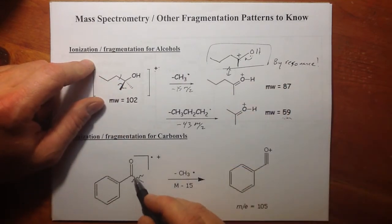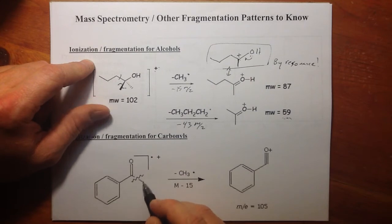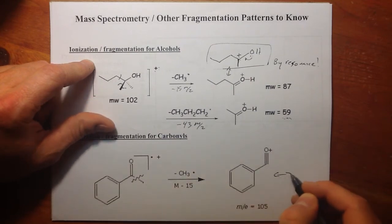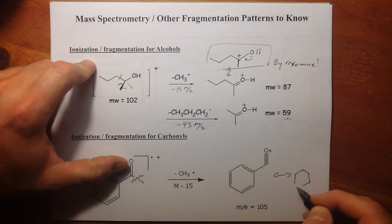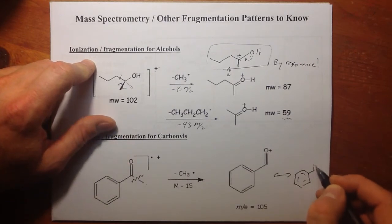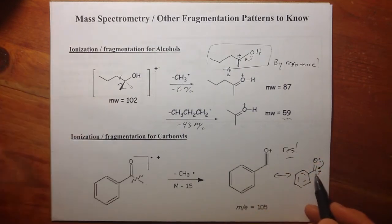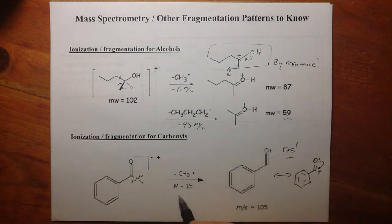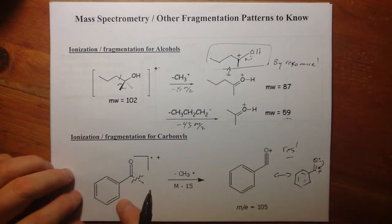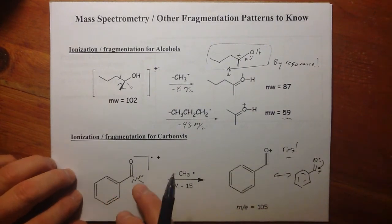Same thing for carbonyls. Think next to the carbon that's bonded to the oxygen, I can lose those alkyl groups. Because if we wanted to draw what maybe looks more like this, you could say I have a positive charge next to this oxygen. He can come down and by resonance stabilize that positive charge. So you can see a minus 15 M/z value for this phenylmethyl ketone.